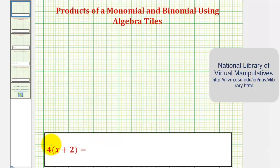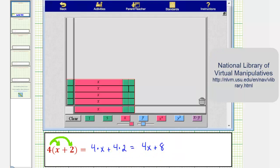If we were to distribute, we would have four times x plus four times two. Again, four times x plus four times two is equal to four x plus eight, which we also found using our algebra tiles.